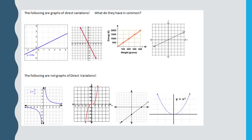Look at the graphs on the bottom. Those are not direct variations. How are they different from the graphs on the top?